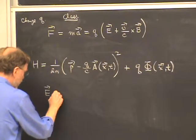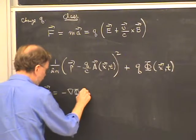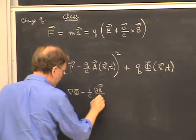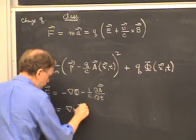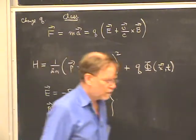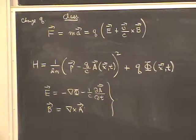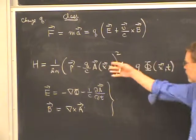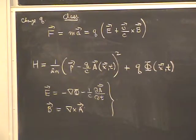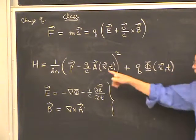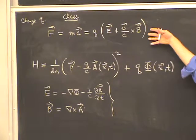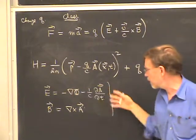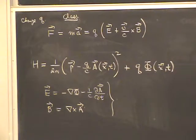Electric fields and magnetic fields are expressed in terms of the potentials by E equals minus gradient phi minus (1/c) dA/dt, and B equals the curl of A — standard results from electromagnetic theory. One of the strange features of this classical Hamiltonian is that it's expressed in terms of potentials. This is in contrast to the Newton-Lorentz equations of motion, which involve the electric and magnetic fields directly. You have to use potentials even in classical mechanics if you want a Lagrangian or Hamiltonian.